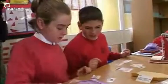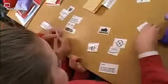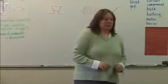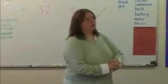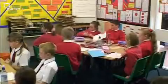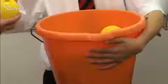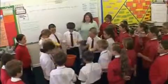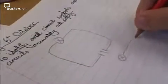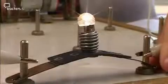In Zoe's lesson on circuits and components, she firstly ascertained the children's level of understanding using card matching. The whiteboards provided Zoe with a quick way of checking the children's progress. She used role play to visualise a circuit with cell, switch and bulb. The class experimented and then recorded their work as circuit diagrams.